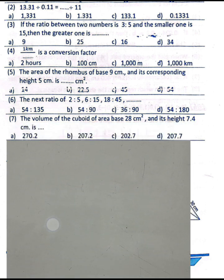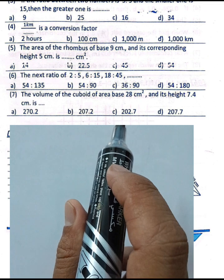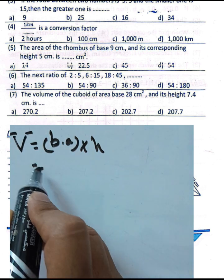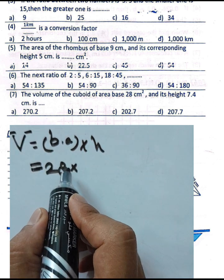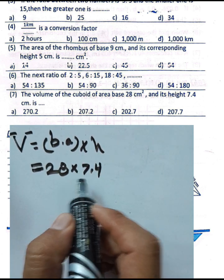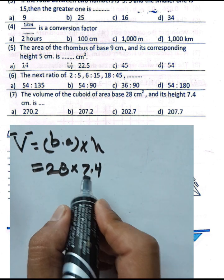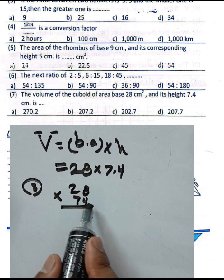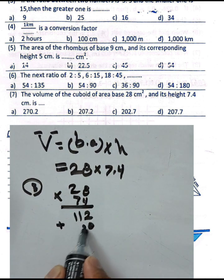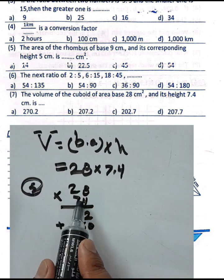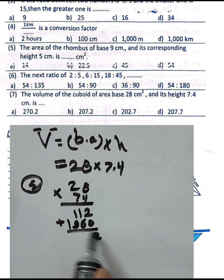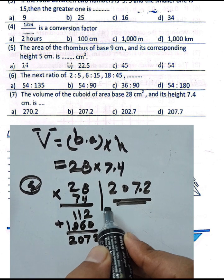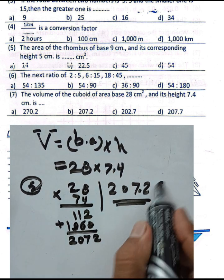Question seven: find the volume of a cuboid with base area 28 square centimeters and height 7.4 centimeters. Volume equals base area times height: 28 times 7.4. Multiply 28 by 74, then place the decimal point one place from the right. The result is 207.2 cubic centimeters.